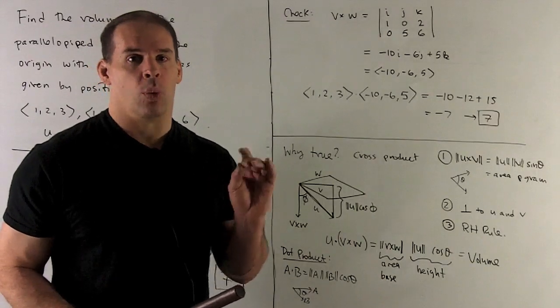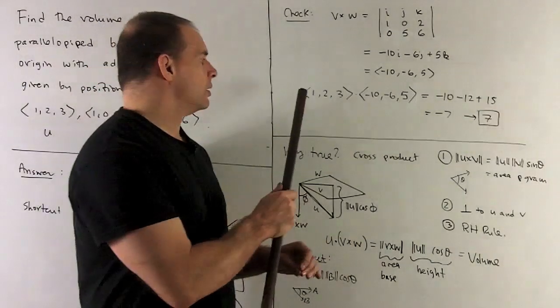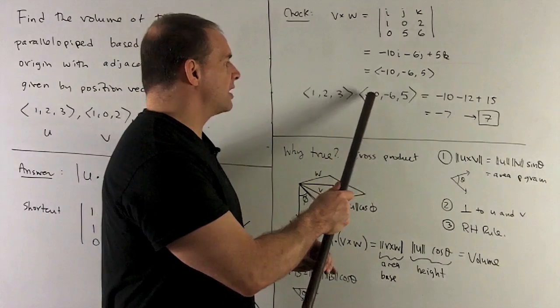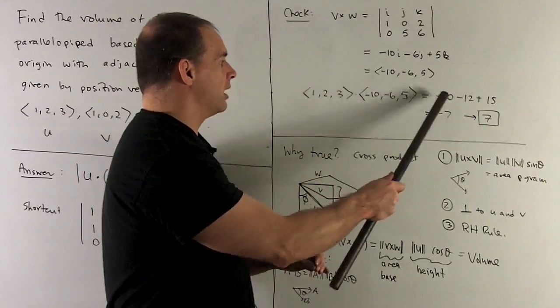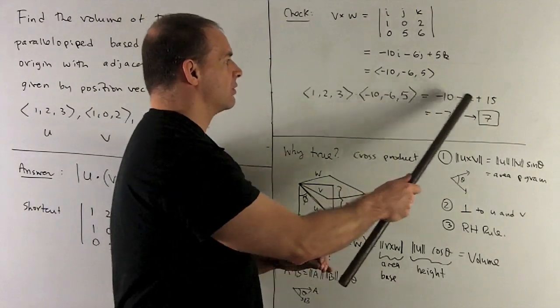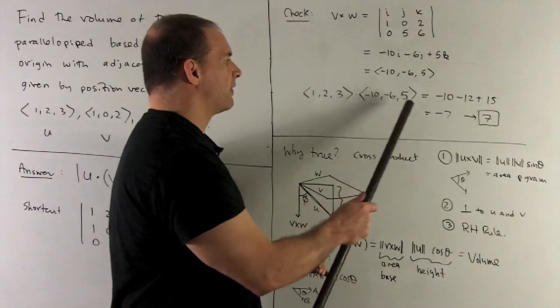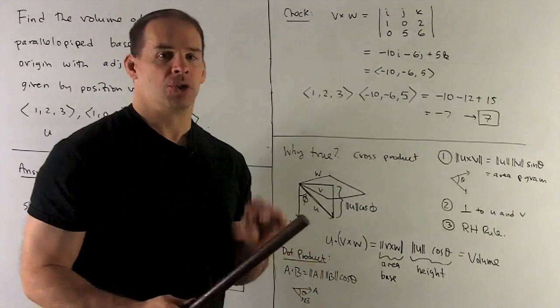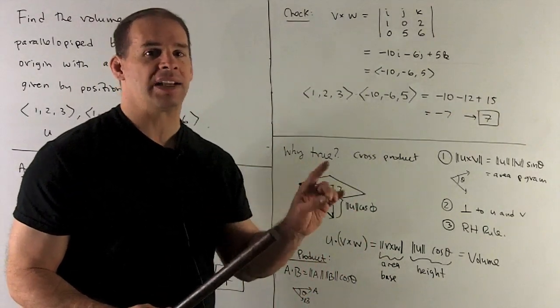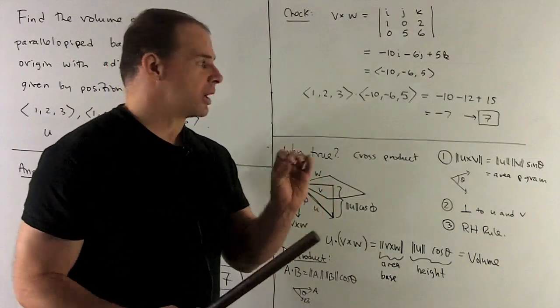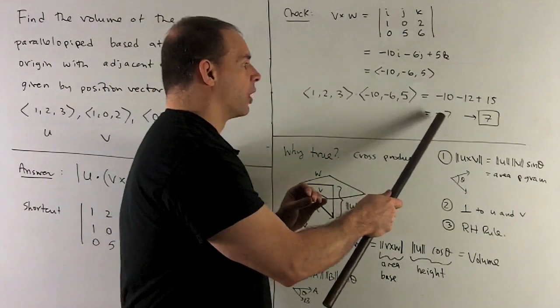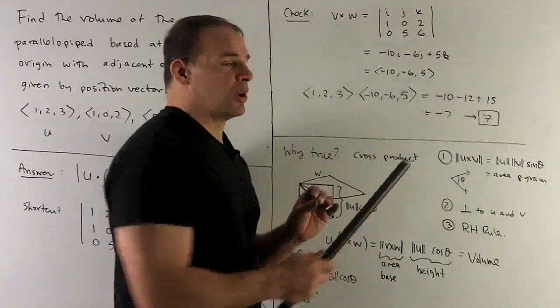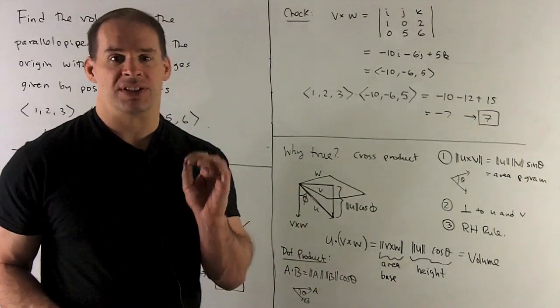I want to take the dot product of that with (1, 2, 3). So what do we get? We have 1 times minus 10. So that's a minus 10. 2 times minus 6 gives me a minus 12. 3 times 5 gives me a 15. So our dot is just you multiply like slots and then add up. What comes out is a minus 7. I throw away the minus sign. So, again, we see we get a volume of 7.